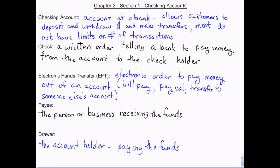The difference between a checking account and a savings account: savings accounts are meant for saving money, and so banks don't want you to be making a bunch of transactions. As a matter of fact, there are federal limits to the number of transactions that can be taken out of a savings account in a month.